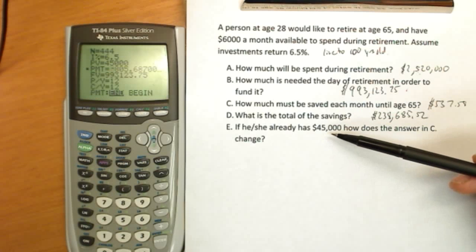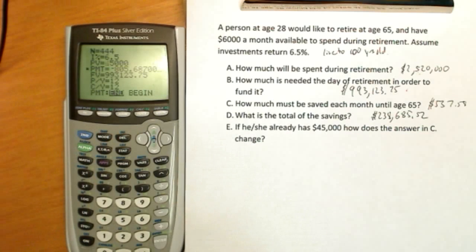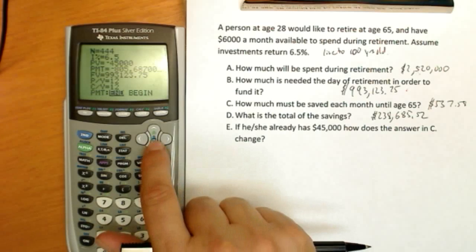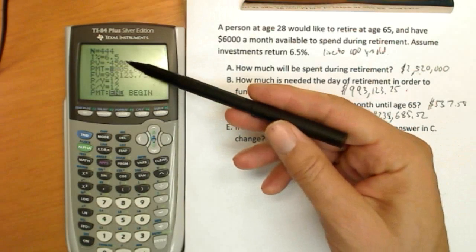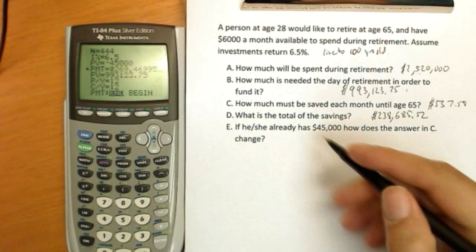The money has to be helping you in some way. It can't be hurting you. The problem is that those signs have to agree. I need to make that a negative $45,000. So now it's being added to my account along with the monthly payments. When I solve for monthly payments, I see a remarkable drop.